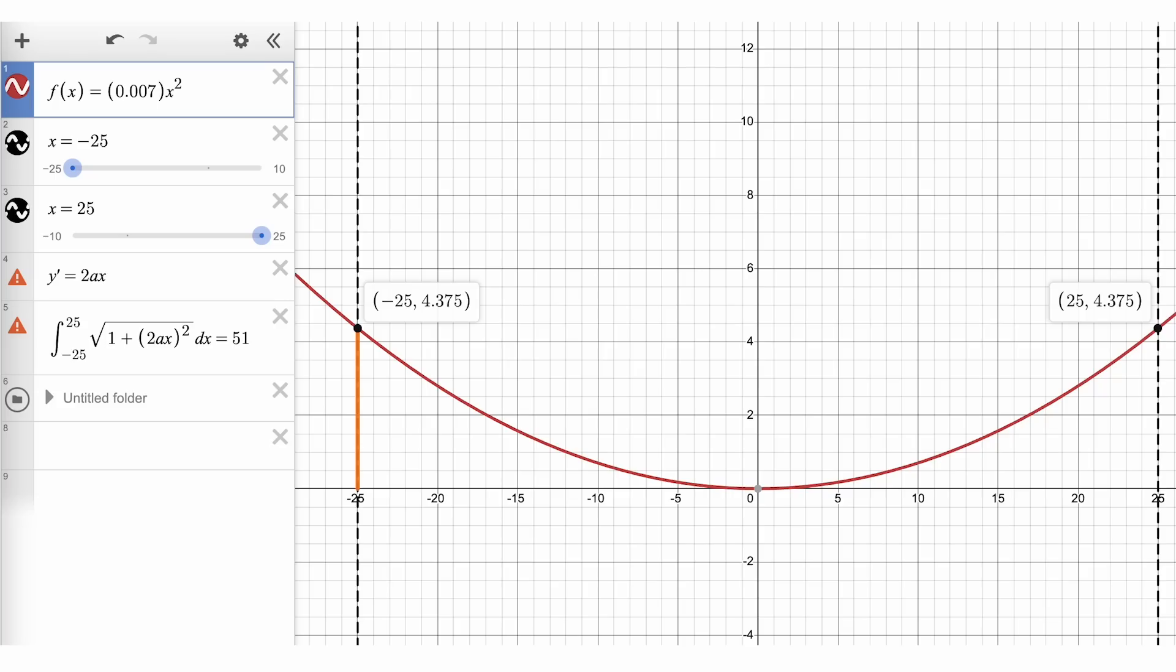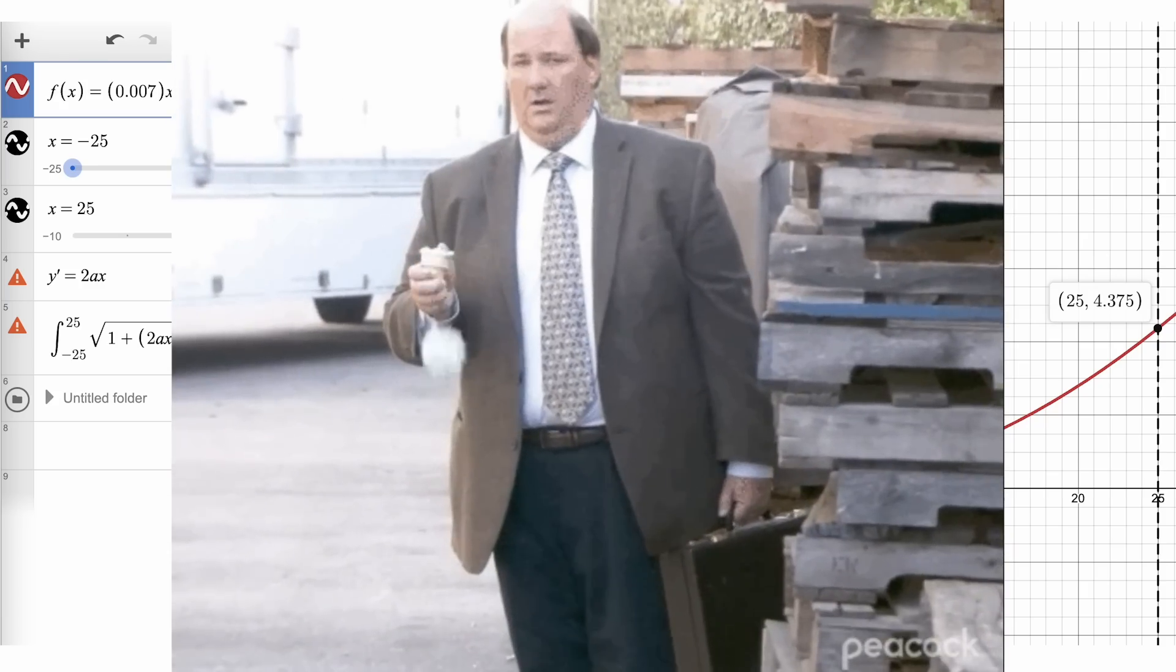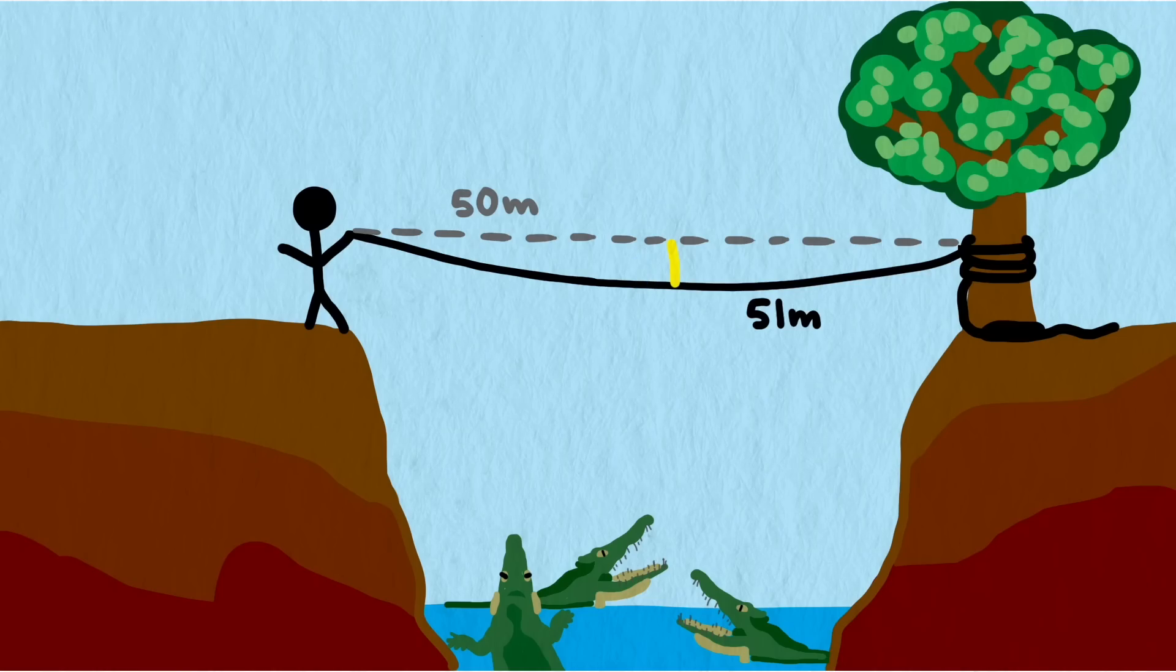In class, when we reach this final value, there's an audible gasp for many students. One foot or one meter of slack allows the rope to sag almost four and a half feet or four and a half meters in the middle. If we'd instead used the more accurate hyperbolic cosine model, we would have gotten 4.355 units, which is very close to our parabolic model.